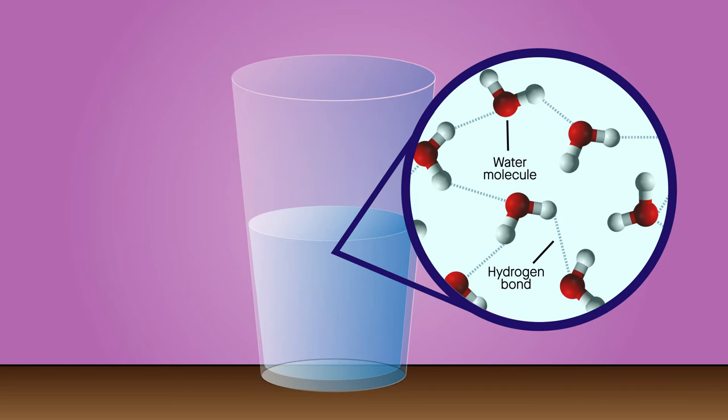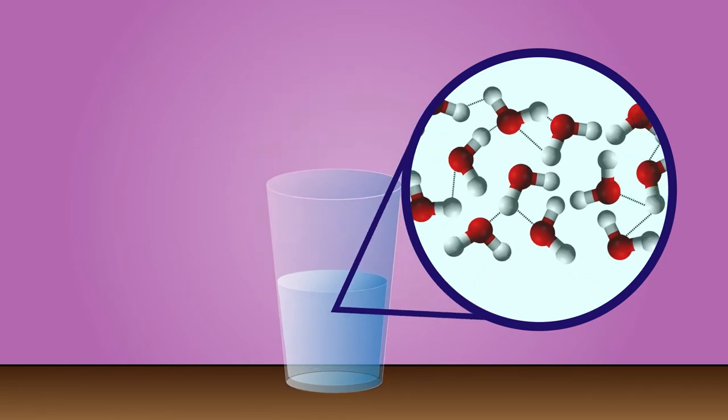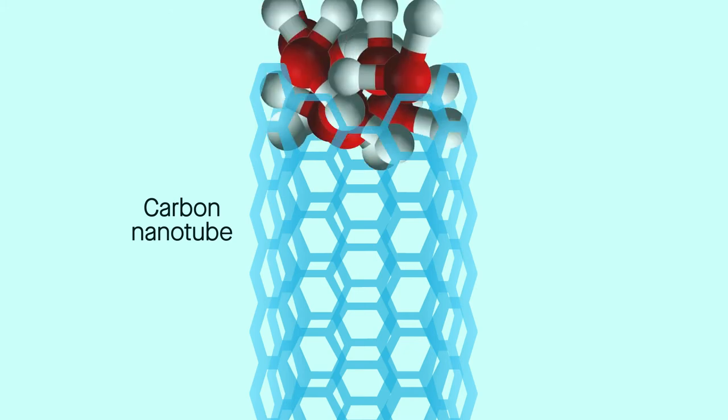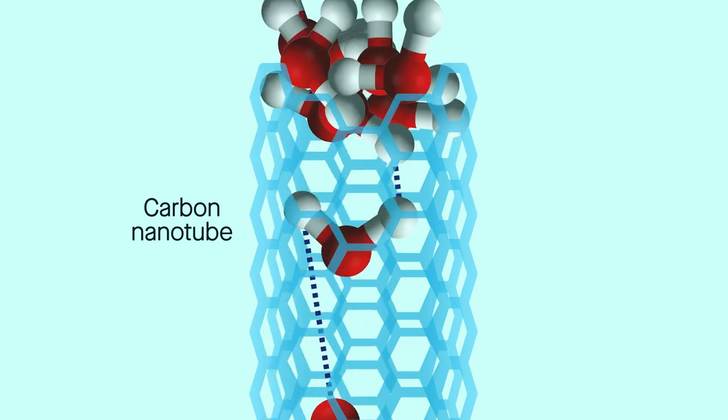For example, while we might expect water to become more viscous when confined to small spaces, studies have shown the opposite. Forcing water through the inside of a carbon nanotube can actually collapse bulky 3D clusters into thin 1D chains of molecules.